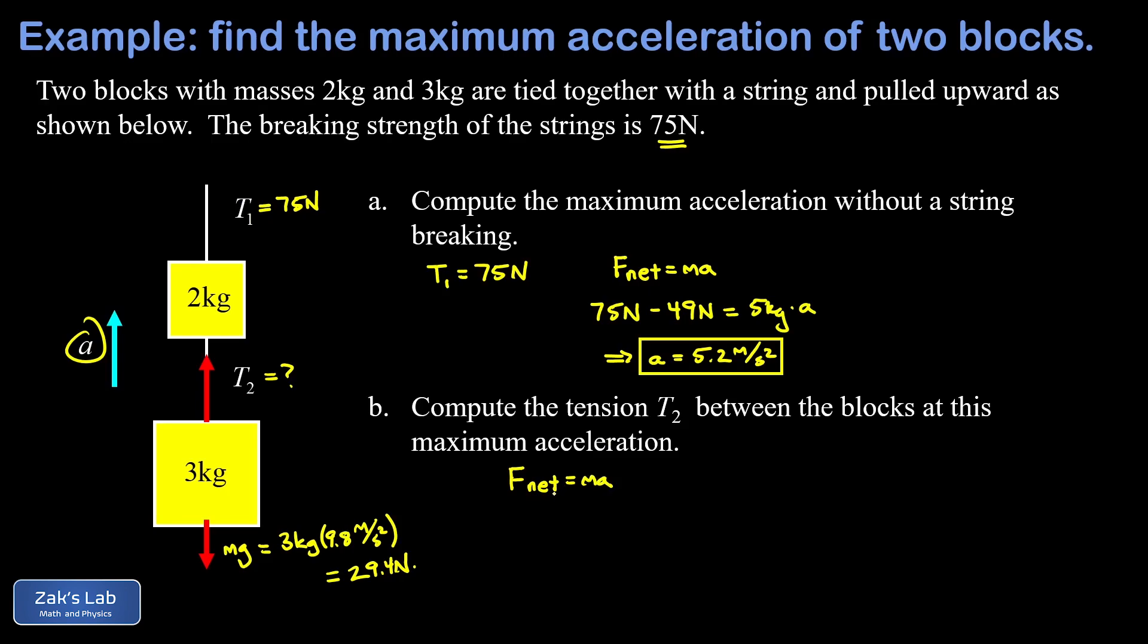So this time when we apply Newton's second law again, F net equals ma, we plug in our net force: our upward force T2 is unknown, our downward force of gravity on this block - that's 29.4 newtons - the mass of the block is three kilograms, and our acceleration is known because we found it in the first part of the problem, so that's 5.2 meters per second squared.